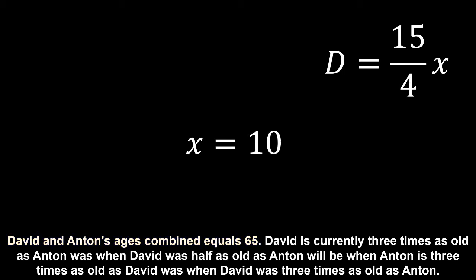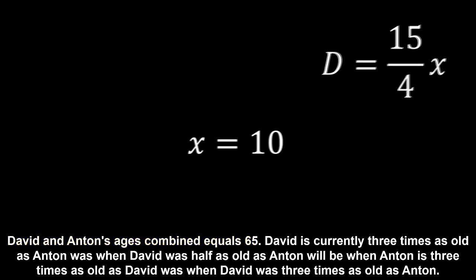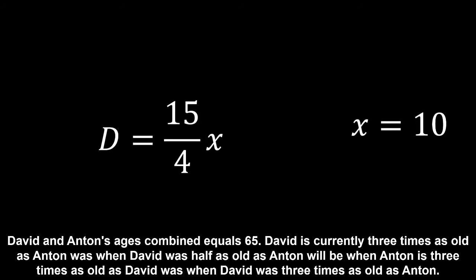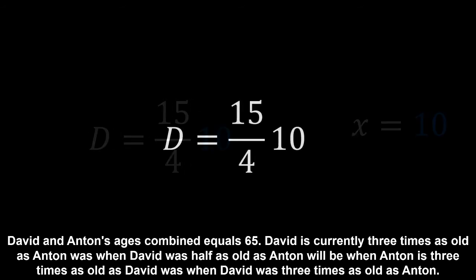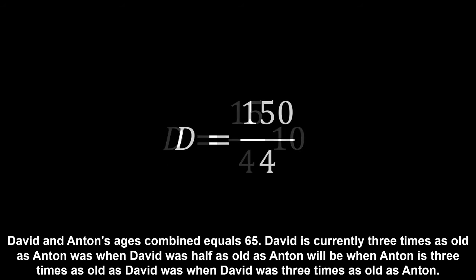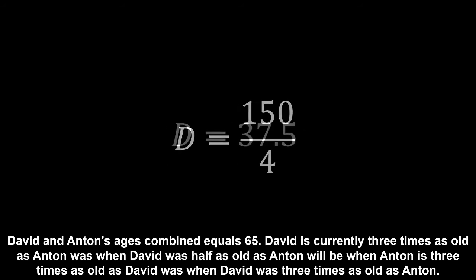We can now look at David's current age defined by this formula. Adding in the value of X, we work out that David's age is 150 on 4, or 37.5 units of time.